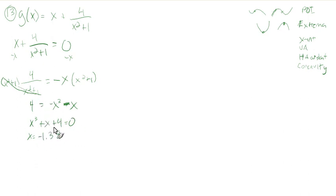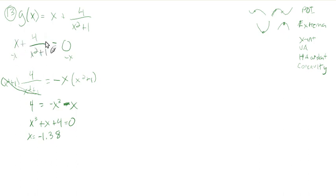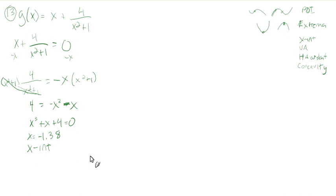If I were writing a calculus textbook I wouldn't have this be a zero, but it happens. We set the function equal to zero, so we found an x-intercept. We could also look at vertical asymptotes — those happen when the function is undefined, which would mean the denominator equals zero.